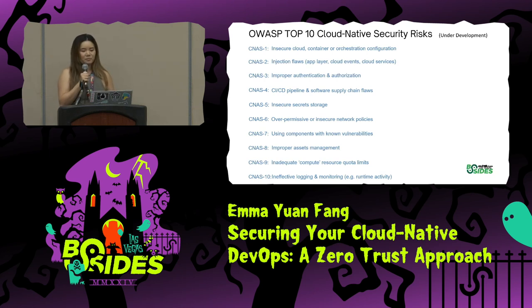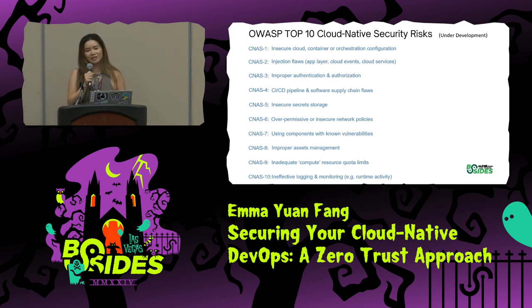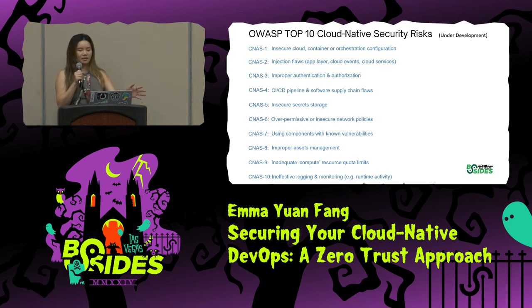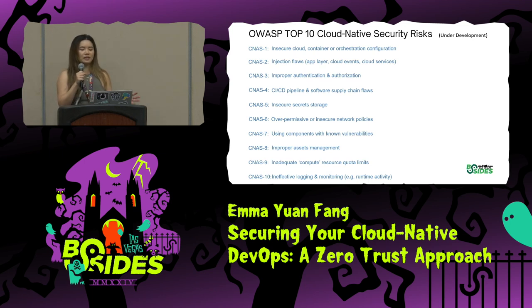Security professionals are looking into cloud native security risk. The OWASP top 10 is doing good work, but the cloud native risk document is still under development — because this space is constantly changing. You can't just define a risk framework and call it done. You also need to constantly improve your visibility across all infrastructure components and services. It's very challenging in this space.